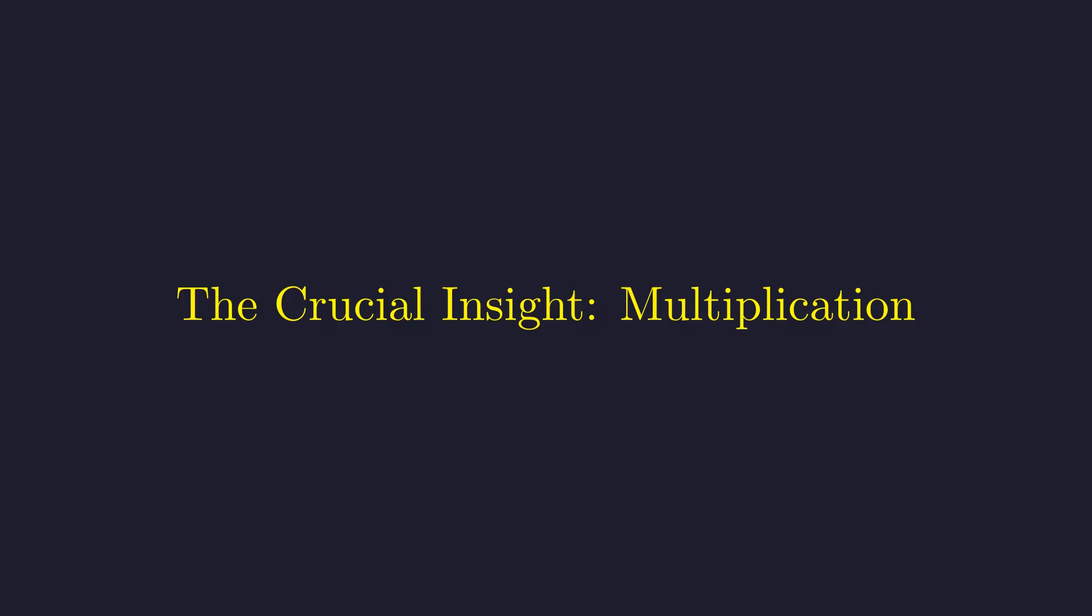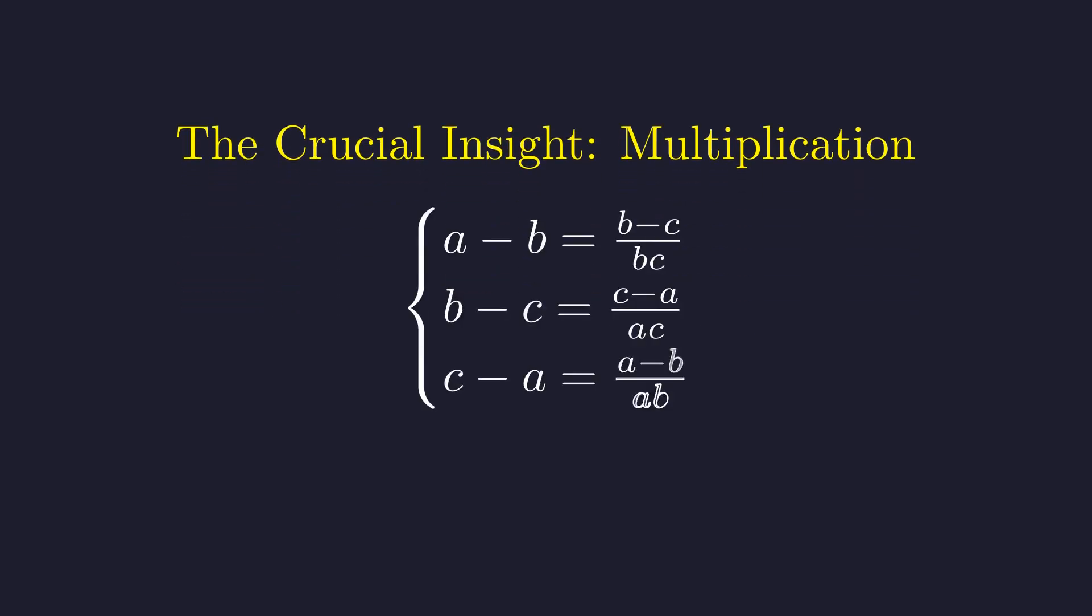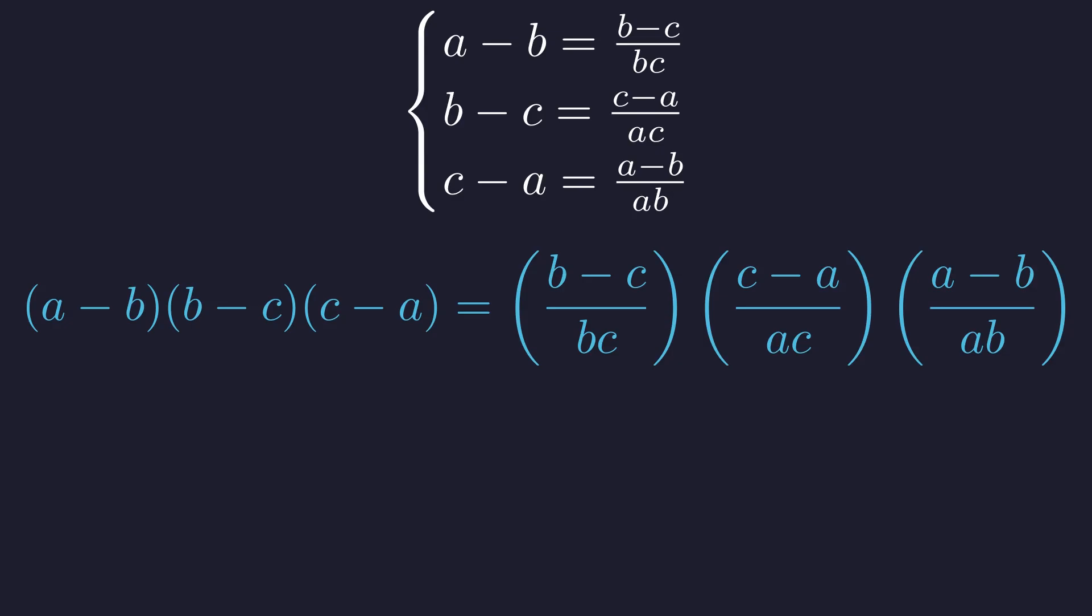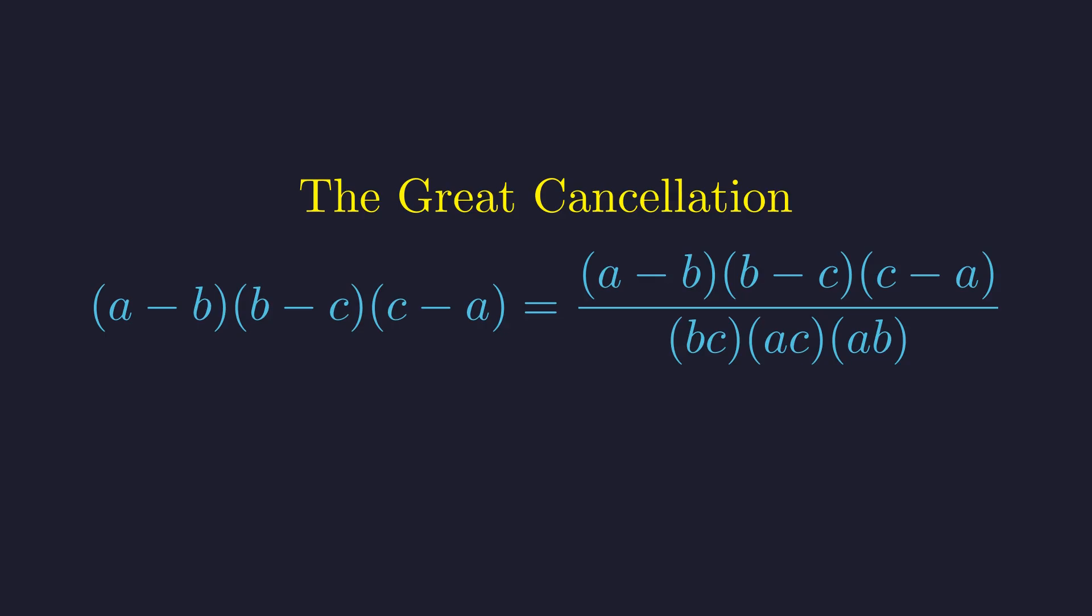Now let's put our three equations together and see the magic. Here are the three relationships we derived. Notice the beautiful, cyclic symmetry. Let's multiply the three left-hand sides together and the three right-hand sides together. Now we simplify. The numerators multiply together and the denominators multiply together. Let's simplify the denominator.